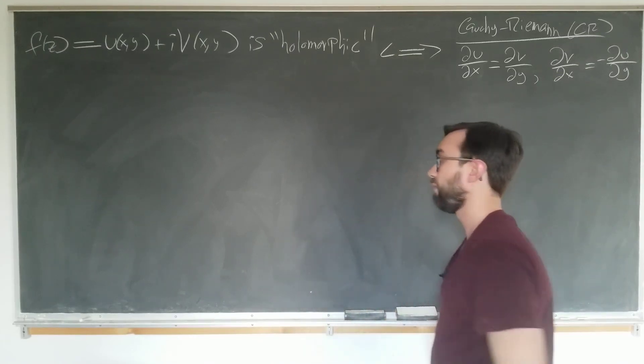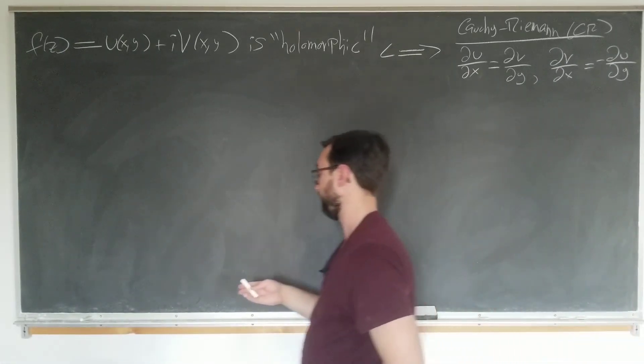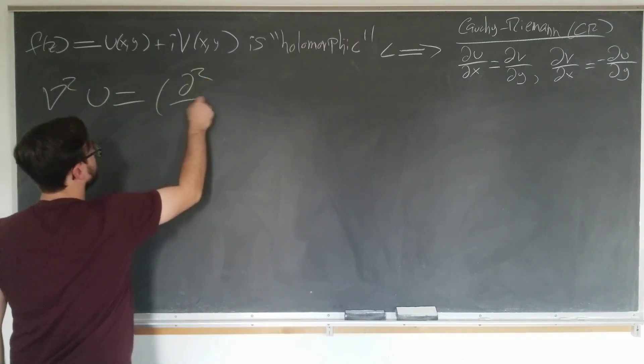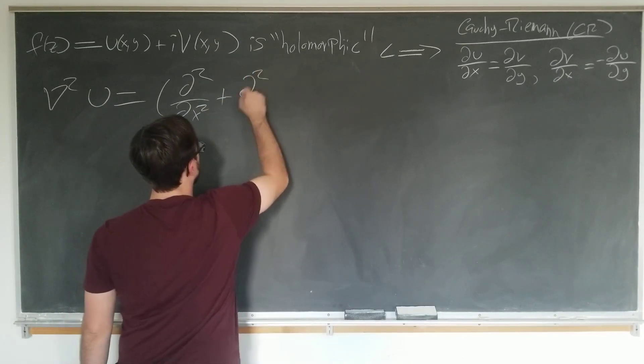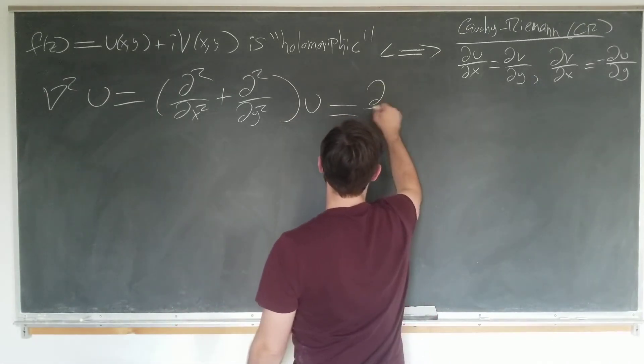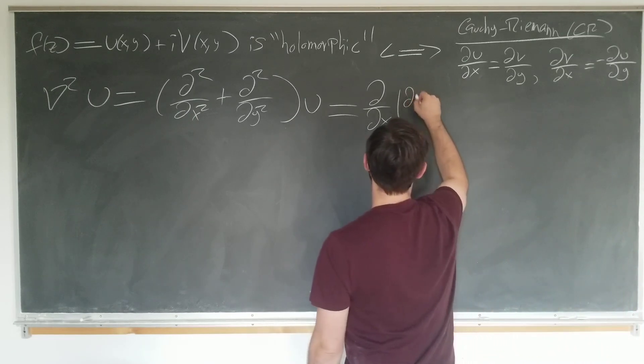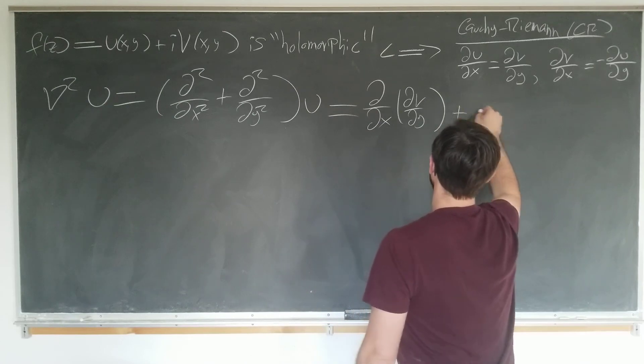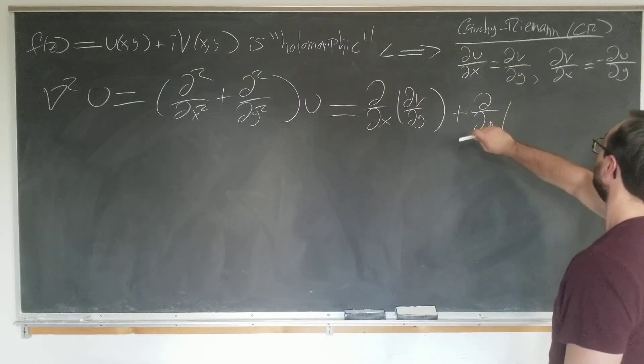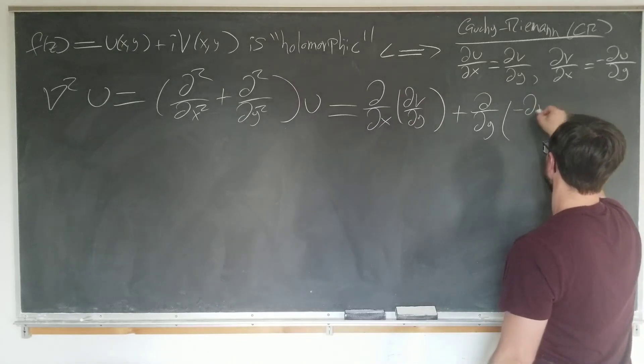The most common one is to simply evaluate the Laplacian of the components and show that it is in fact zero. So we have the Laplacian of u is just d squared by dx squared plus d squared by dy squared, acting on u, which is just d by dx. Using this equation here, dx u is dv by dy, plus the y-derivative of du by dy, which is just minus dv by dx.